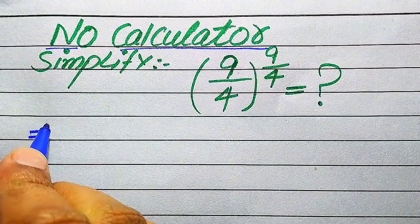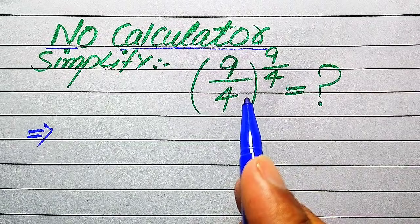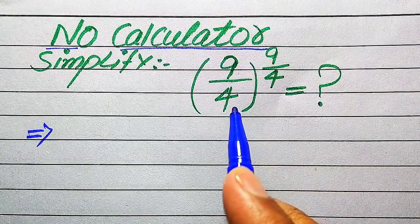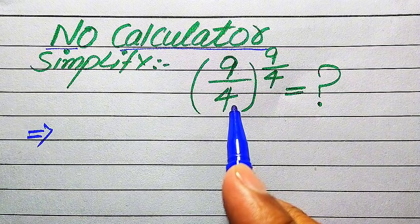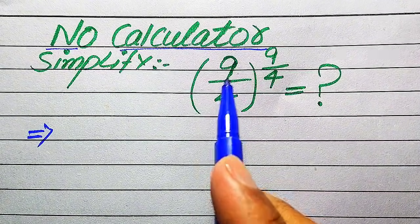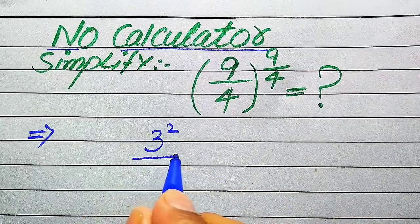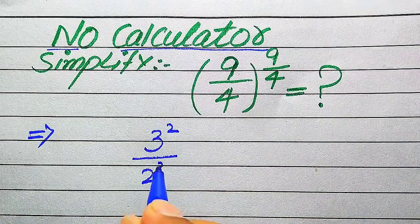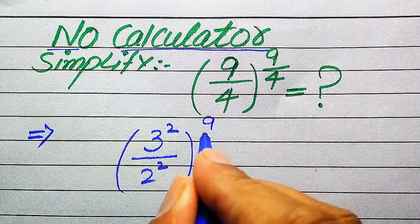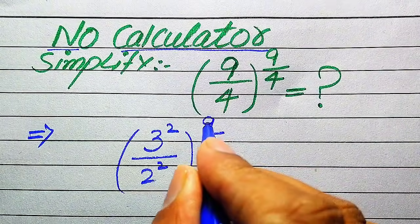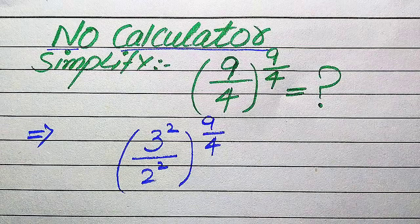Now we move towards the solution. First we need to focus on the base of this term, which is 9 divided by 4. We write this base in prime factor form. The prime factors of 9 are 3 squared, and the prime factors of 4 are 2 squared. The whole exponent is 9 divided by 4.